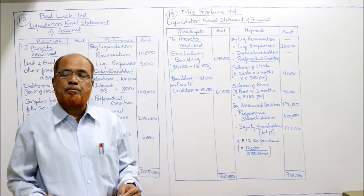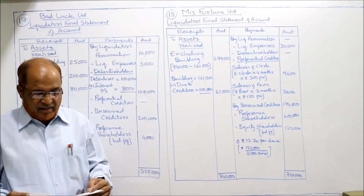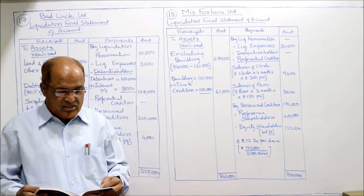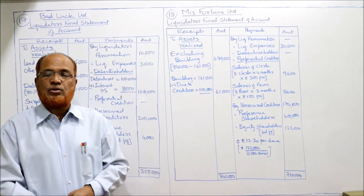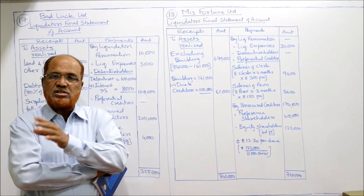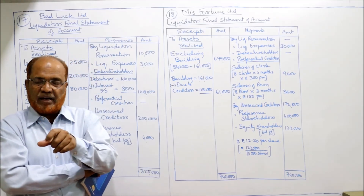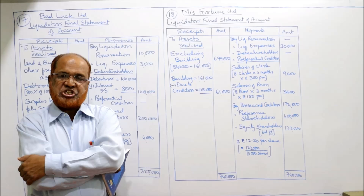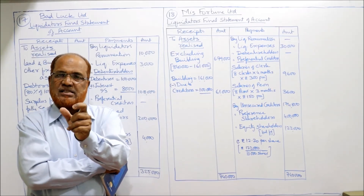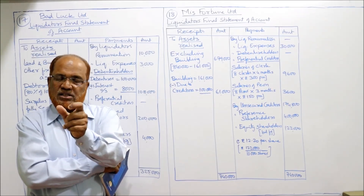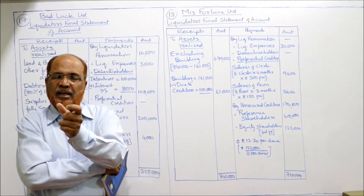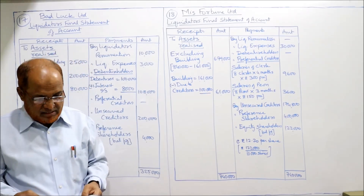So we get 61,000 surplus from fully secured creditor Patel. However, the 1,61,000 building value is included in the total assets of 8,40,000. So from 8,40,000 we first deduct 1,61,000 (since building was already mortgaged), giving 6,79,000 in other assets realized. From 1,61,000 subtract 1,00,000 loan from Patel — remaining 61,000 is the surplus from fully secured creditor.